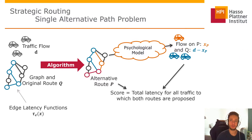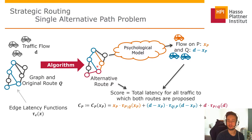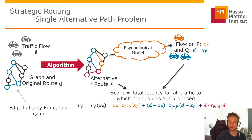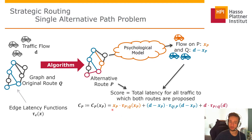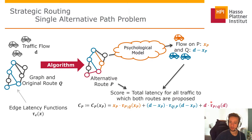The overall score we want to optimize is the overall travel time. This cost C_P depends on the alternative route and implicitly on how many people are going to use it, describing the total latency of the entire system. We have the non-shared segments of the alternative in orange where X_P drivers travel, the original route segments with D minus X_P people, and on the overlapping parts there are always D drivers.